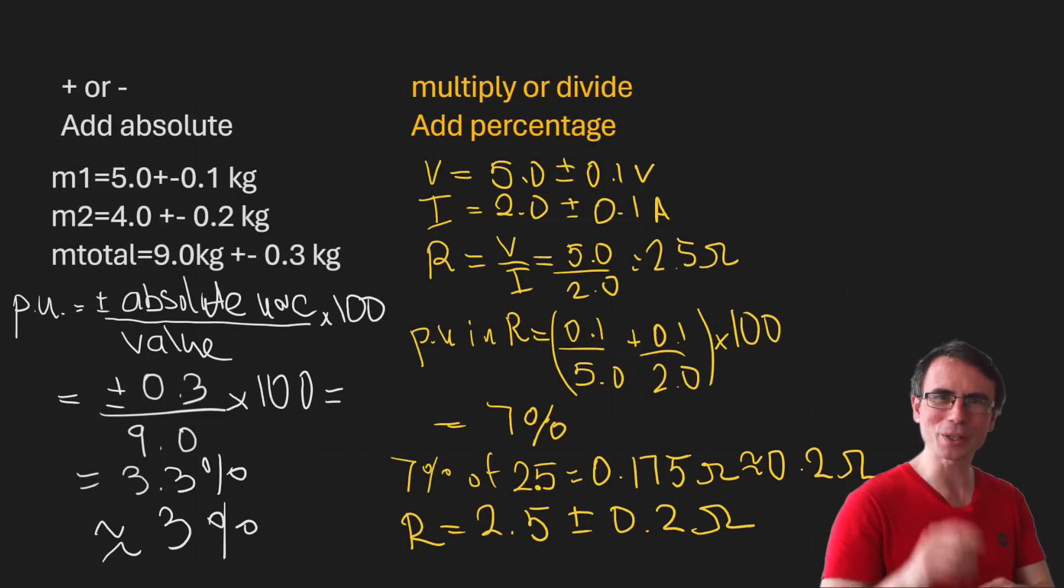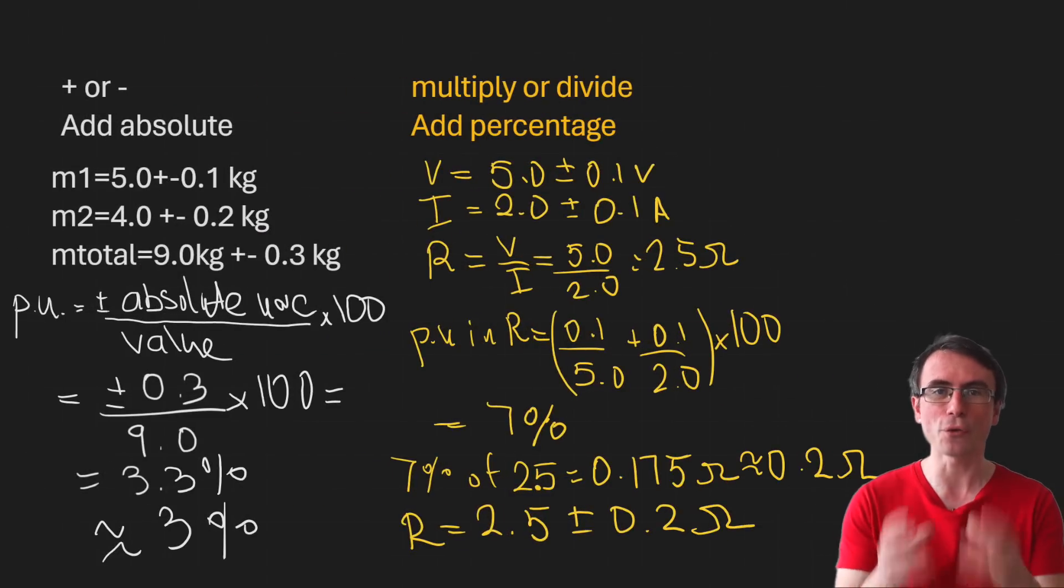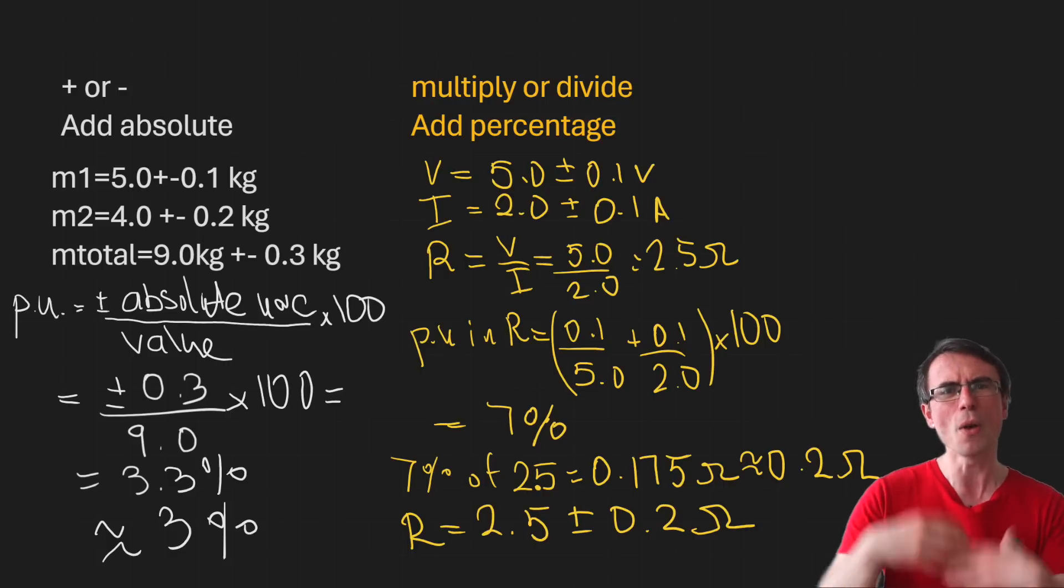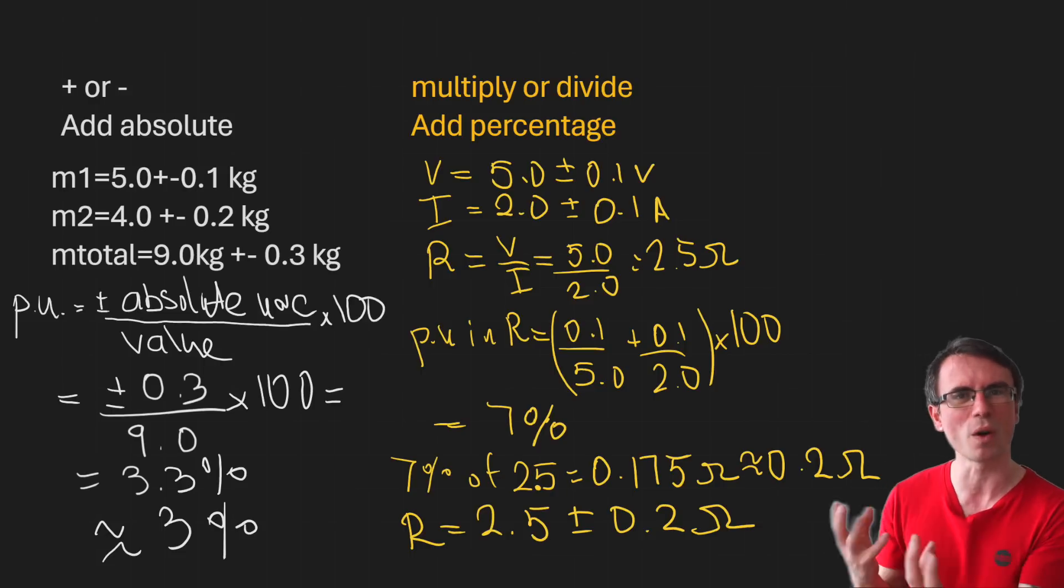One of the things that is almost guaranteed to appear is uncertainties. Make sure that we're certain about the uncertainties. For instance, know all the rules for combining uncertainties and be ready to apply them. Please note that in some questions you may get a quantity that's raised to a power, and if that's the case, the percentage uncertainty is equal to the power multiplied by the percentage uncertainty of that quantity individually.